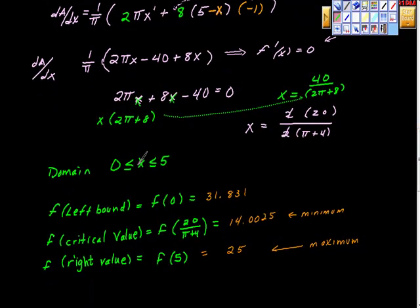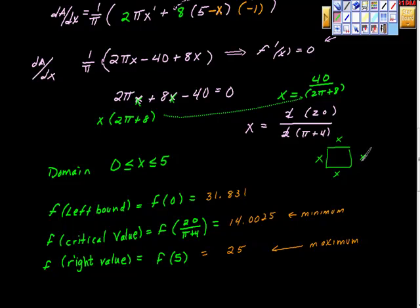We have a domain here: x must be greater than or equal to zero, since we're measuring distances and distances can't be negative. Also, x must be less than or equal to five, because the square's perimeter is 4x - if x equals 5, the perimeter is already 20, using all the wire. Anything greater than 5 would exceed the available wire, so we stay inside the domain [0, 5].